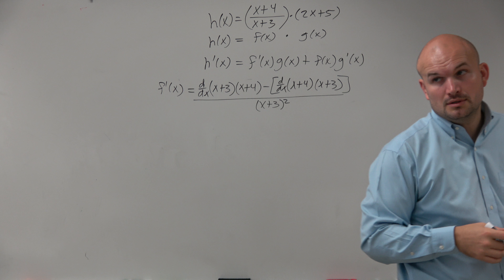When we simplify this, we're left with x plus 4 minus x minus 3, all over x plus 3 squared. Make sure you distribute that negative. The x's go to zero and we have 4 minus 3, which is 1 over x plus 3 squared. So we found f prime — it took a little work, but we found f prime. g prime is not going to be as bad. g prime of x is just 2.